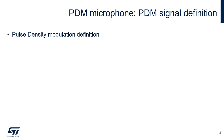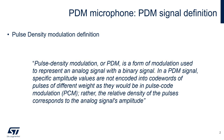As defined by Wikipedia, Pulse Density Modulation, or PDM, is a form of modulation used to represent an analog signal with a binary signal. In a PDM stream, specific amplitude values are not encoded into codewords of pulses of different weight, as they would be in Pulse Code Modulation. Rather, the relative density of the pulses corresponds to the analog signal's amplitude. Let's go in deep on the definition and have a look at how this standard is implemented in a PDM microphone.